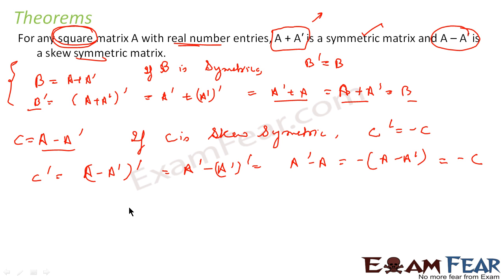For any square matrix A, we can write that square matrix in the form of a symmetric and a skew-symmetric matrix. The symmetric matrix will be A plus A dash, and the skew-symmetric will be A minus A dash.